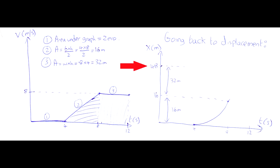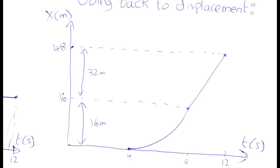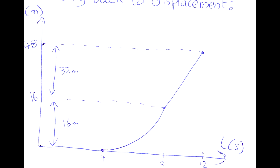So it finishes this third section at a displacement of 48 meters — an additional 32 on top of the 16 it had already traveled. And since it's going at a constant velocity in section 3, its displacement changes at a constant rate, which is a diagonal line. In summary: if we're given a displacement-time graph, we can find the slope of each section to plot the velocity graph, and then find the slope of the velocity-time graph to plot the acceleration-time graph.